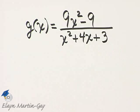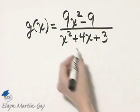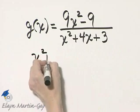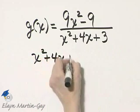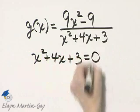So we need to know what numbers, if any, to exclude from the domain. Let's set the denominator equal to zero to find out what values make the denominator zero.